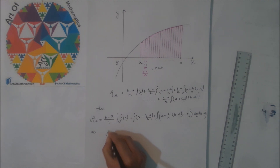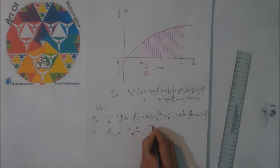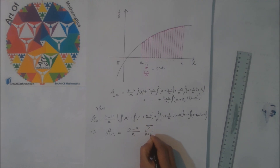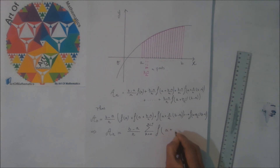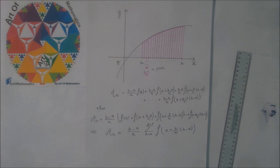So in general, AN is equal to B minus A divided by N, multiplying by the sum of the function values. Now, if N tends to infinity, then the more rectangles we'll have, therefore the better approximation we'll get. In other words, the area of the rectangles gets closer to the exact area under the curve of the function f between x equal to A and x equal to B.